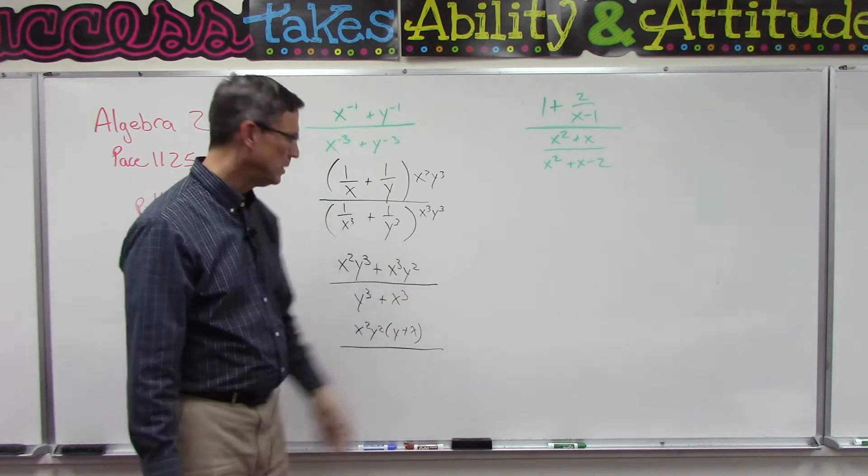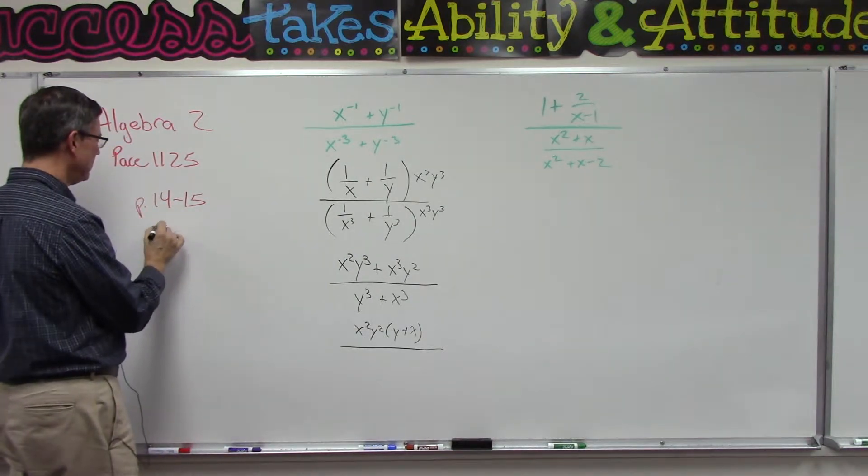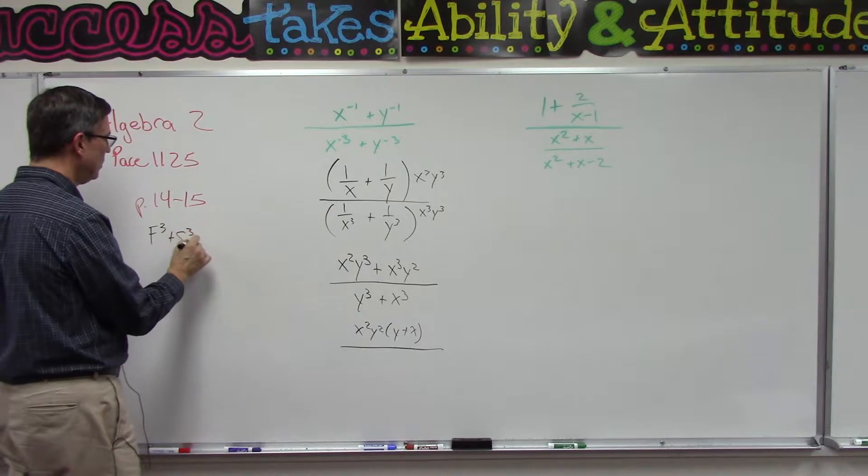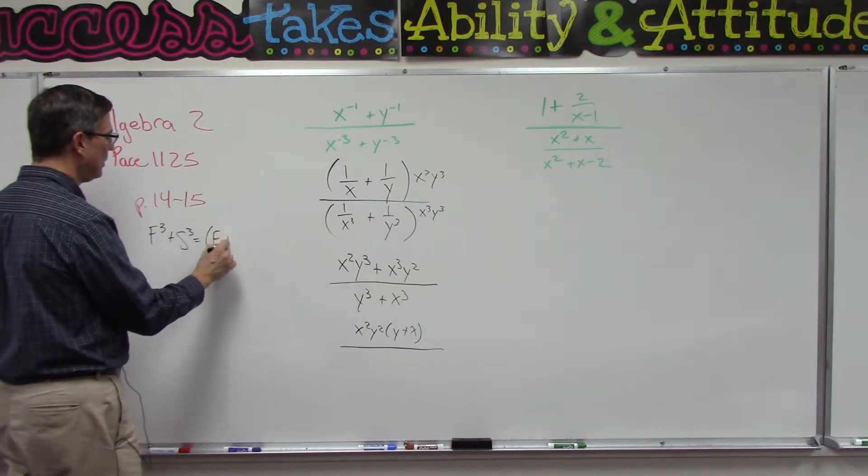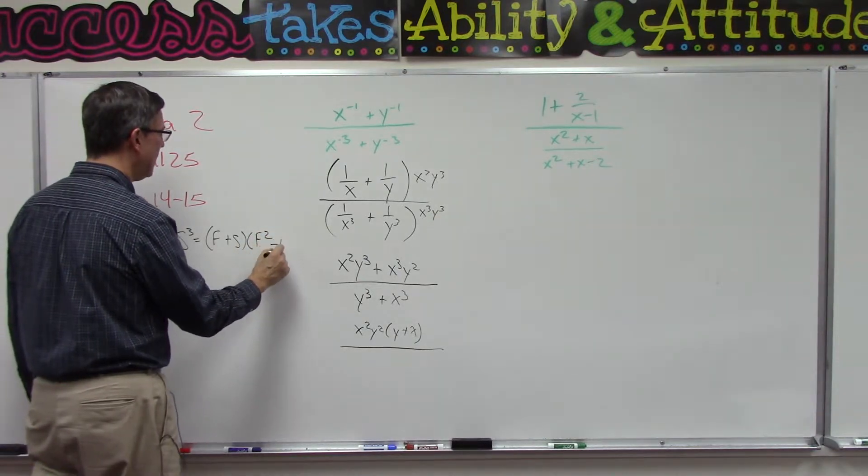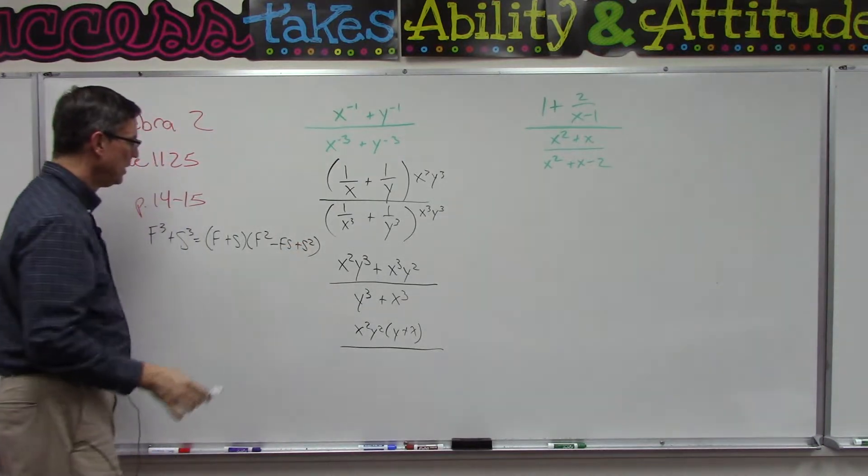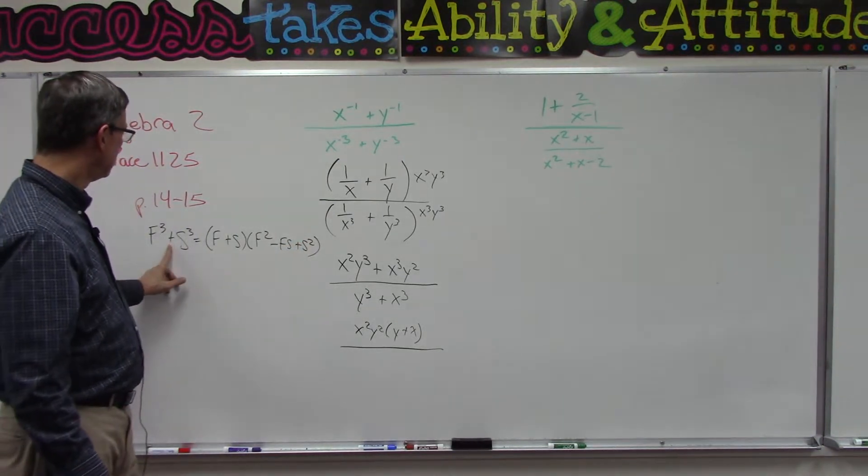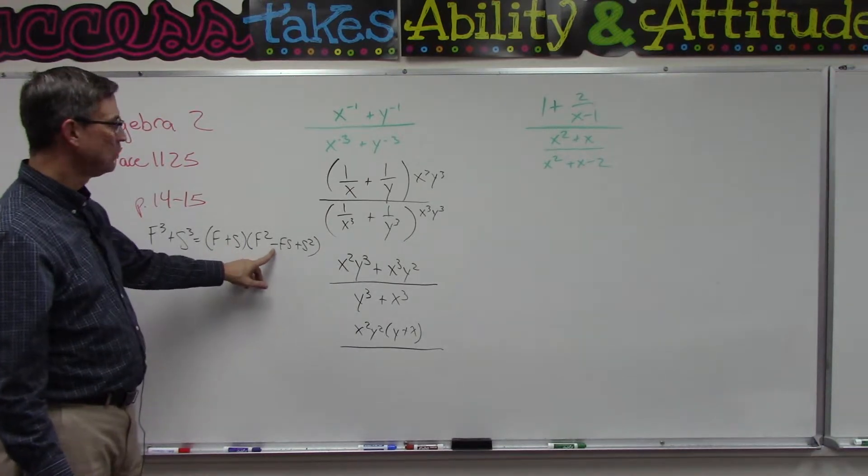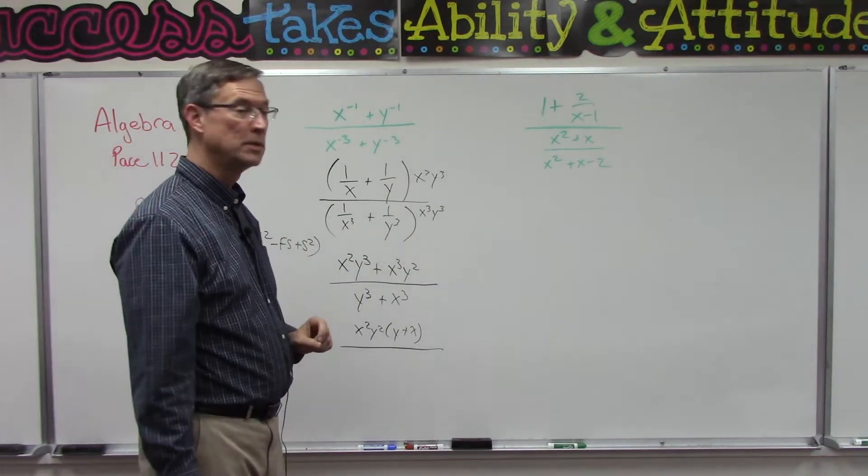Basically it's here, I'll do it right here. If we have first term to the third plus the second term to the third, then this is going to be F plus S times F squared minus FS plus S squared. Do you remember? If this is minus, then this is minus. If this one's plus, then this one's plus. Whatever this one was, this one is the opposite, and then the last one is always positive plus.